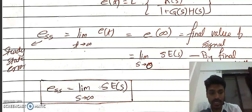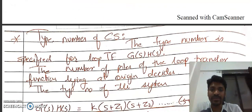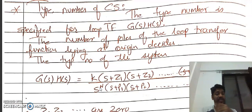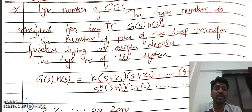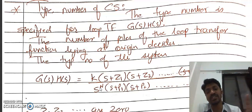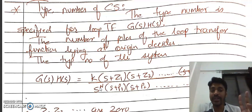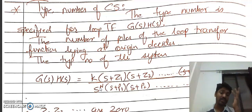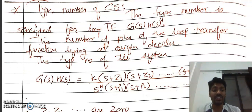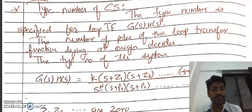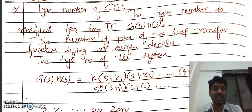Now let us see the type number of the system. Type number is specified for the loop transfer function, which is the product G(S)·H(S). For the order of the system, we look at the highest power of S in the denominator of the transfer function. The type number of the system is the number of poles of the open loop transfer function lying at the origin. That decides the type number of the system.